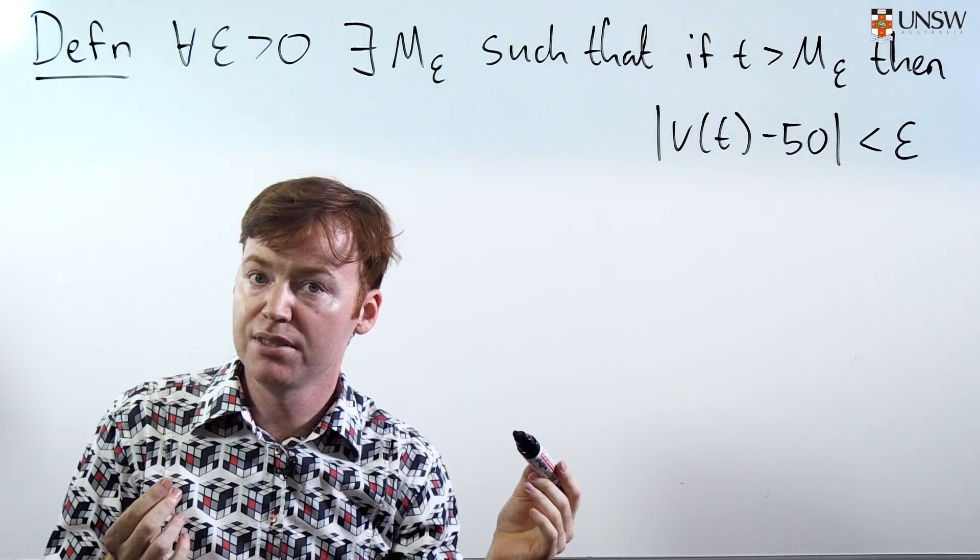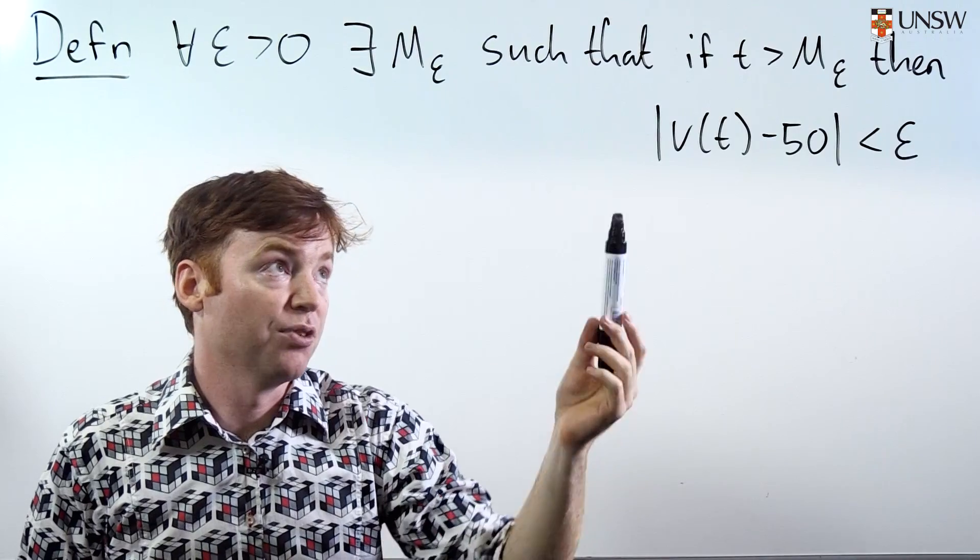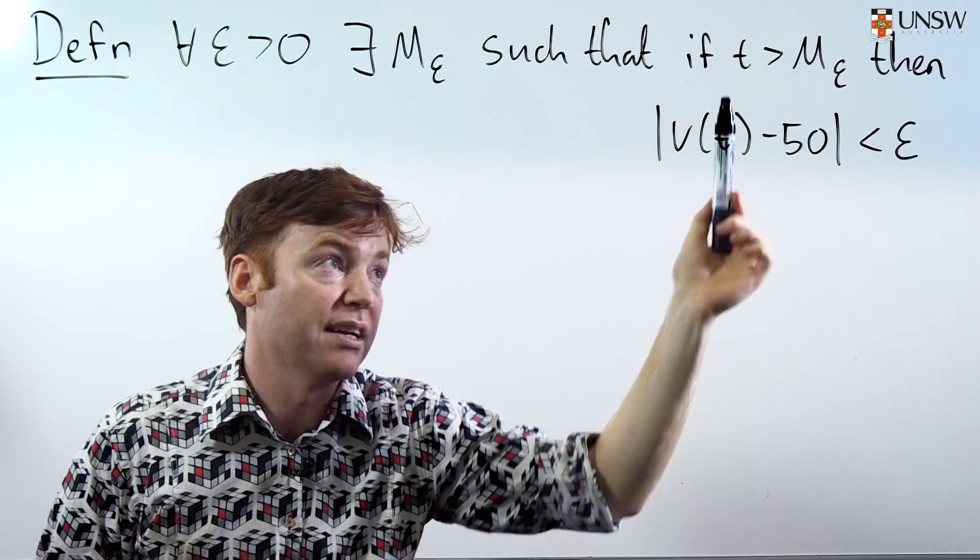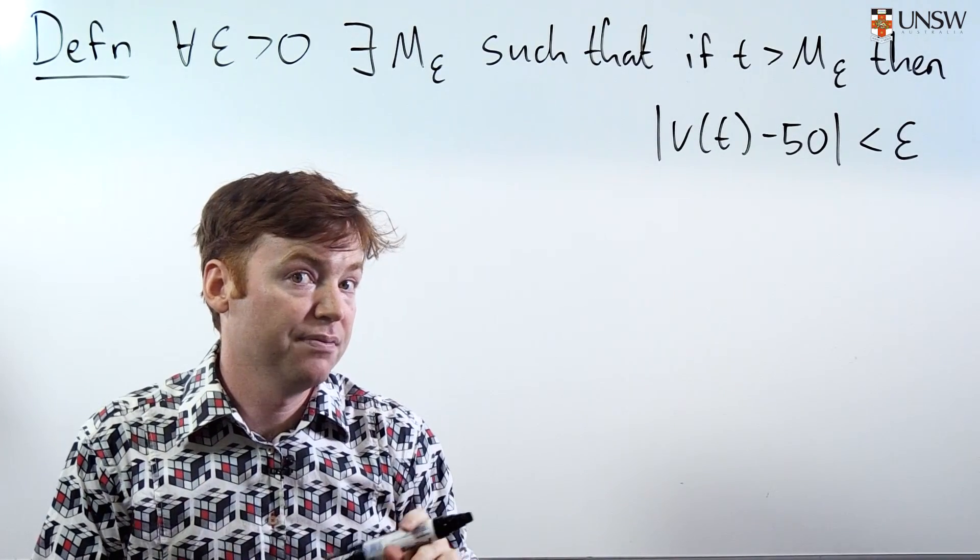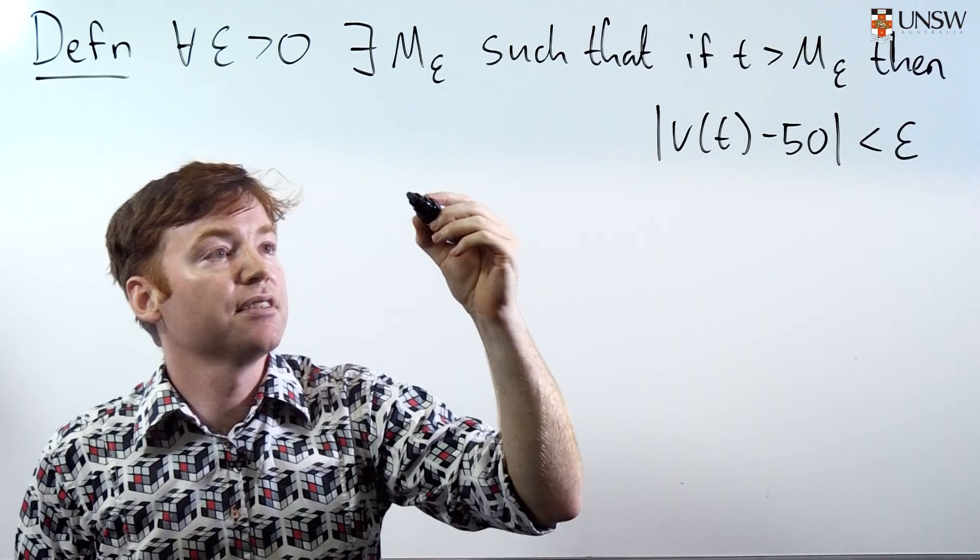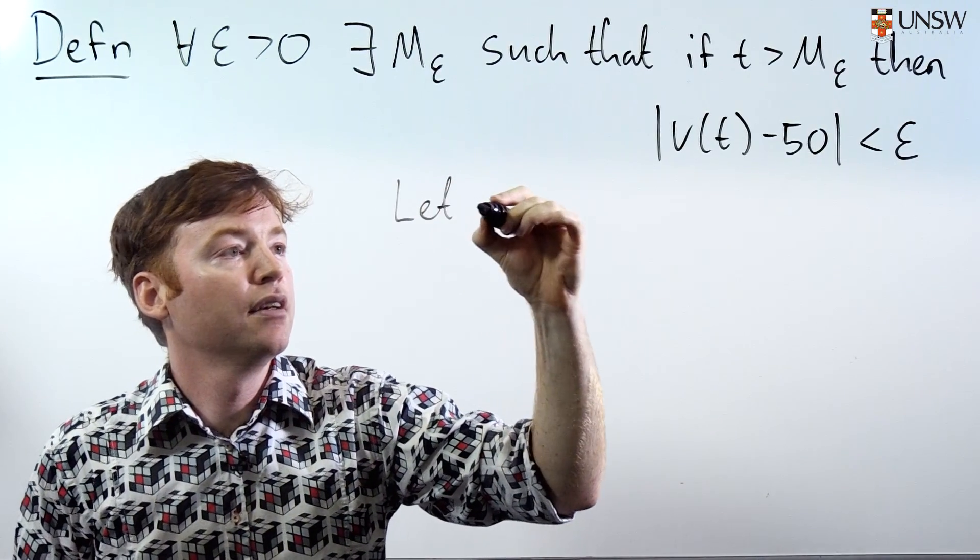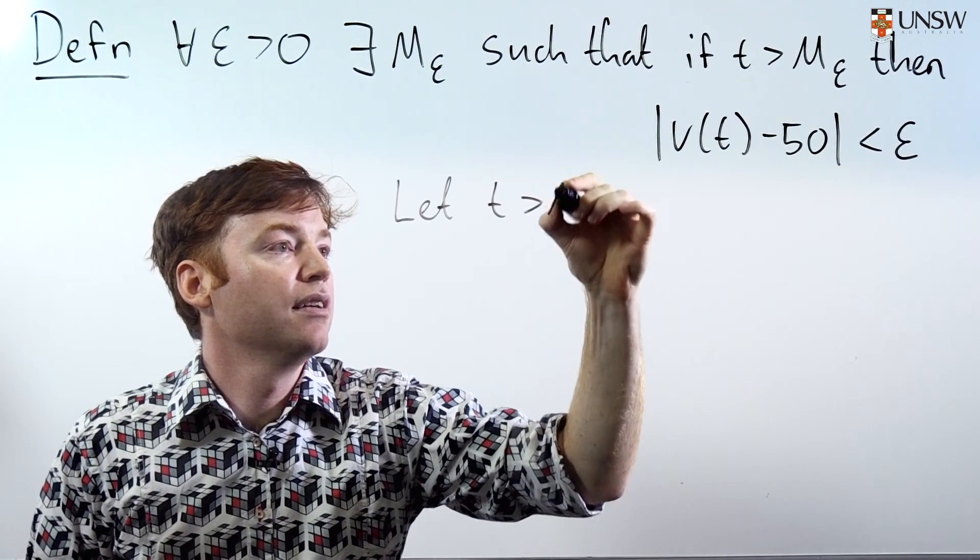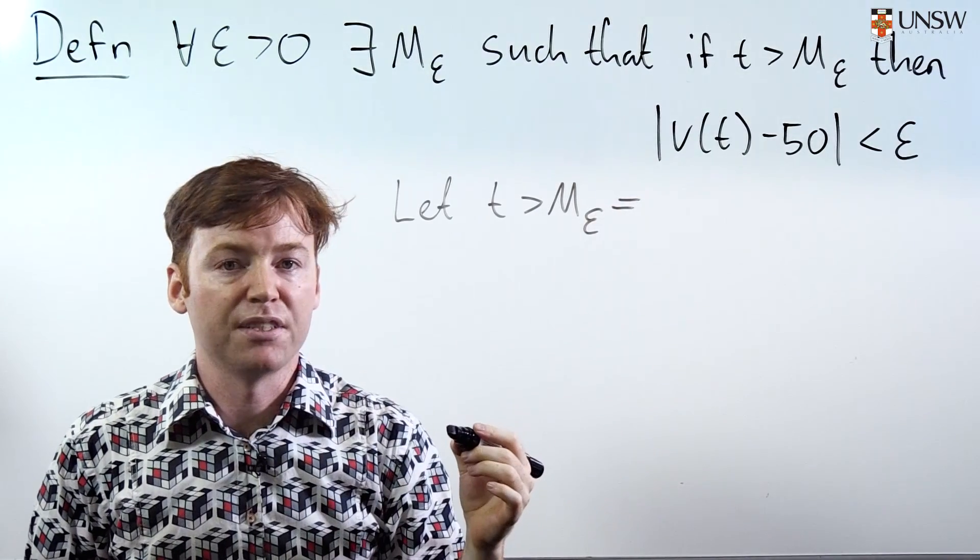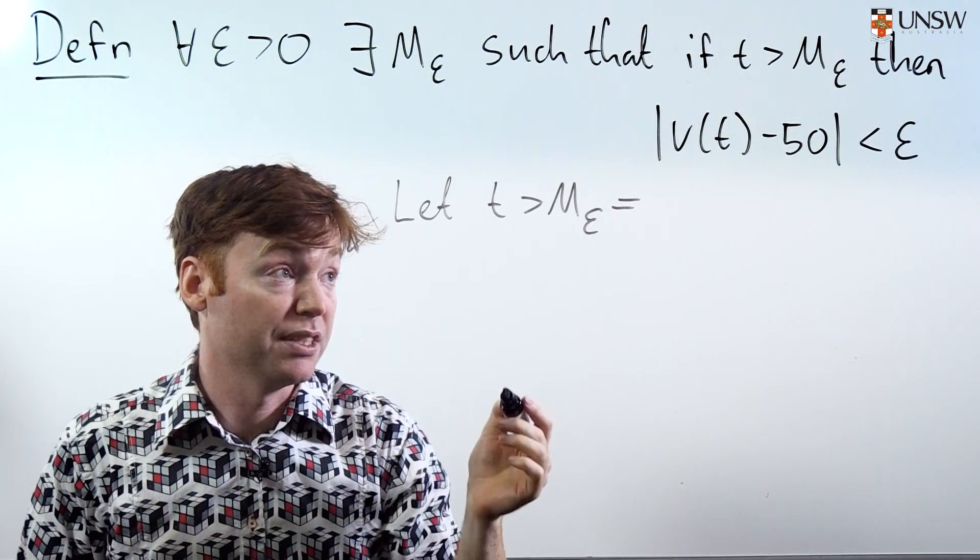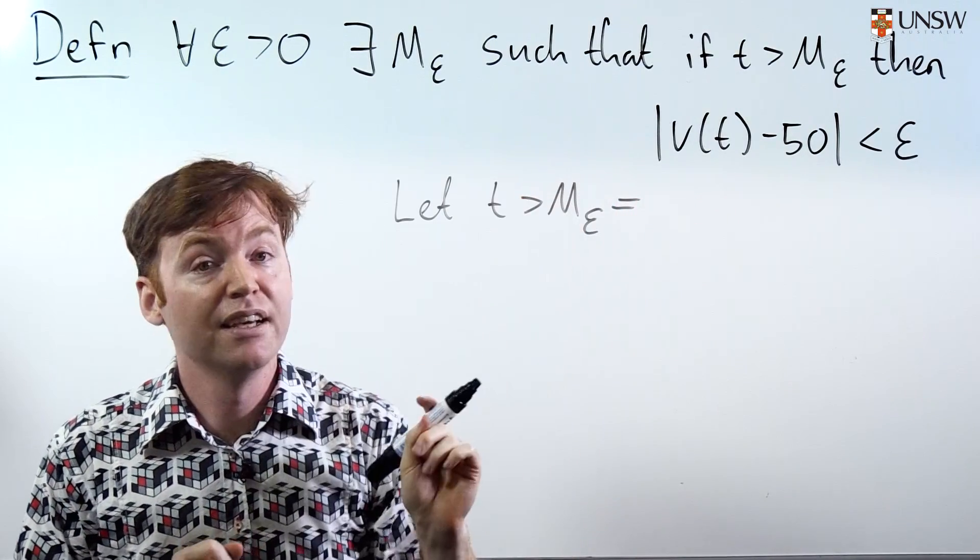Your objective is to find the M epsilon, and your M epsilon has to satisfy this condition, that if t is bigger than M epsilon, then v of t is within epsilon of its limit. You play this game like this. Let t be bigger than M epsilon, and we're going to say what M epsilon is. We're going to say what M epsilon is, but we don't know that yet. So let's just leave it blank for the moment. Let's just assume that it's big enough.